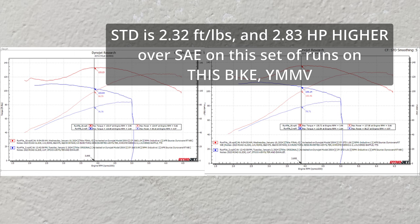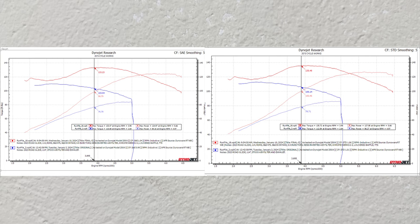This is a good comparison to help you understand when reviewing sheets from other places in the country. I won't be showing any more STD sheets throughout the rest of these videos. The cam made peak torque just below 4,000 RPMs and held it at 133 foot-pounds until about 4,400 RPMs where the torque started to come down and horsepower started coming up. It made very good power all the way up to 6,200 RPMs.